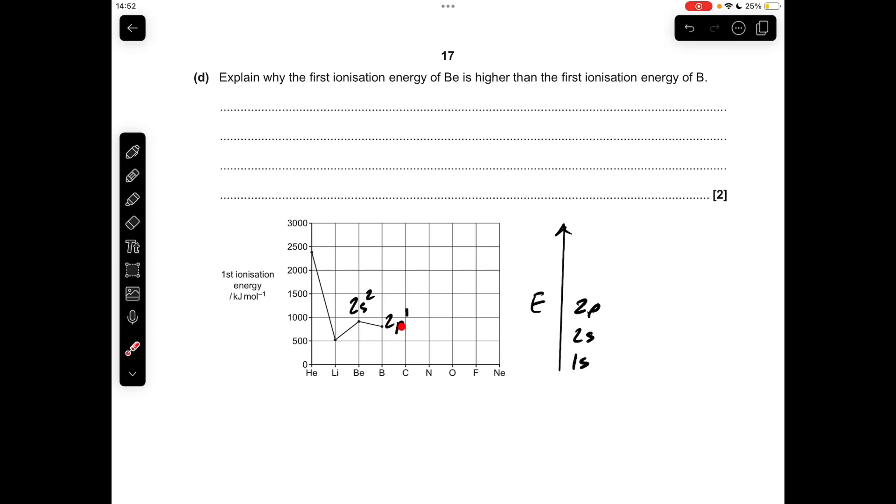Whereas in boron, you're removing the electron from the 2p subshell. So if you remember the relative energies of these subshells, the 2p subshell is higher in energy than 2s, and that makes it slightly easier to remove the electron. So you get this dip in first ionization energy for boron.